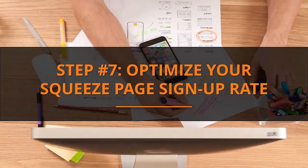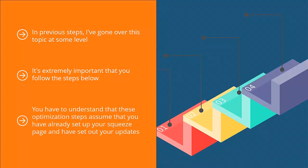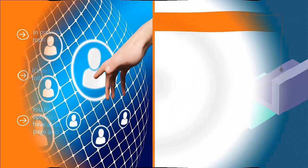Step number seven: optimize your squeeze page signup rate. In previous steps I've gone over this topic at some level, but optimizing your squeeze page plays a critical role in the success of your mailing list campaigns. You need to go through specialized steps to ensure your optimization efforts are correct. These optimization steps assume you've already set up your squeeze page and have set out your updates, and have already optimized it at some level. Here are further optimization ideas to maximize the conversion ability of your email list recruitment page.